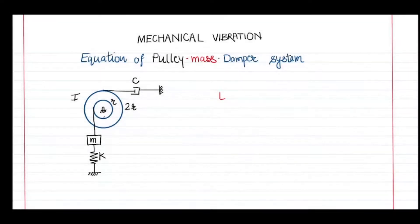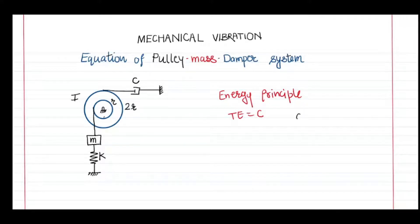When we use the energy approach we follow the conservation of energy — we write the total energy expression and consider that the total energy is constant. If we differentiate the total energy expression with respect to time it gives the equation of motion because it equals zero. However, this principle is based on the law of conservation of energy. When there is no damper the energy is conserved, with the mass having kinetic energy and the spring having potential energy exchanging between them.